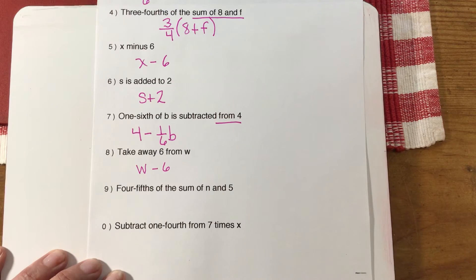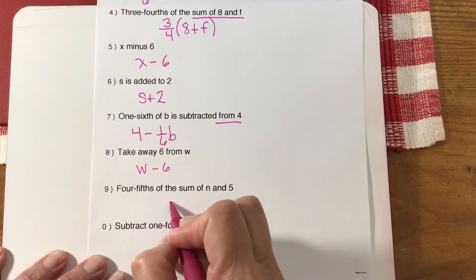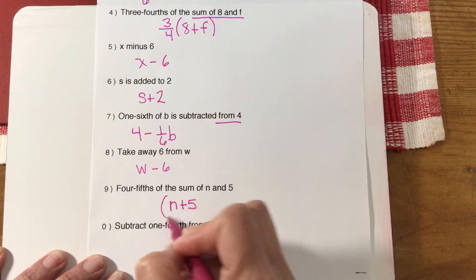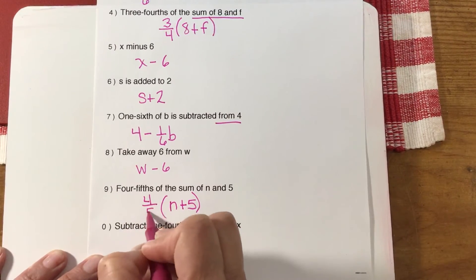Four-fifths of the sum of n and five. We did one similar to this up on number four. So n + 5, because that's the sum of, and four-fifths of that goes right on the outside.